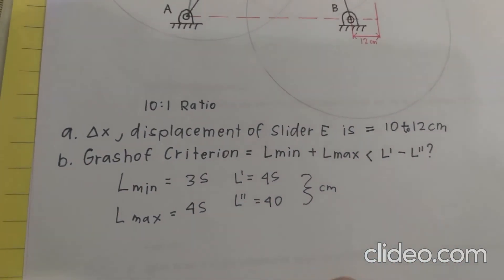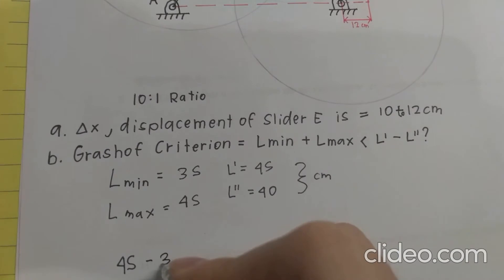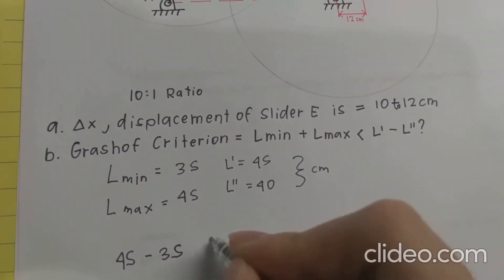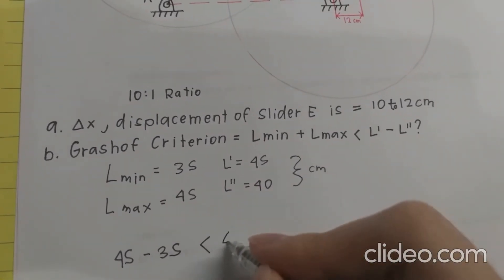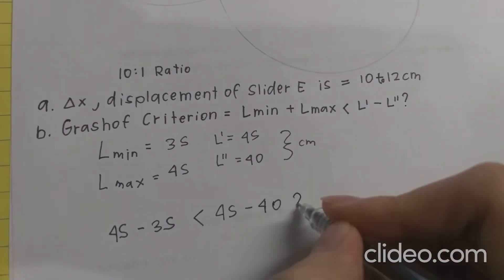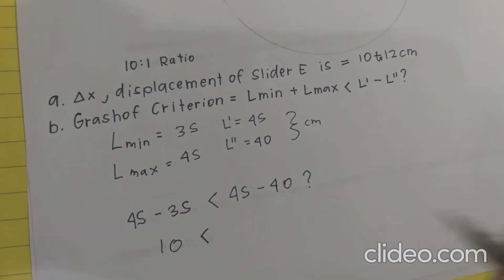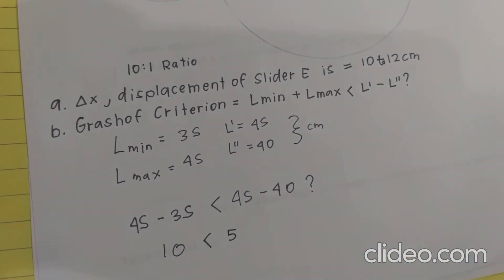Okay, now plugging this in into the formula, we have 45 plus 35. Is it less than 45 plus 40? We'll have 80 is less than 85.